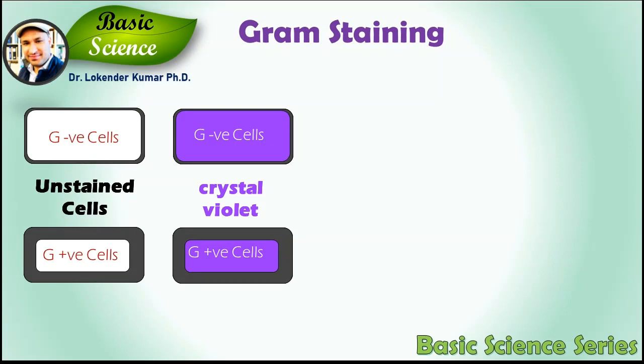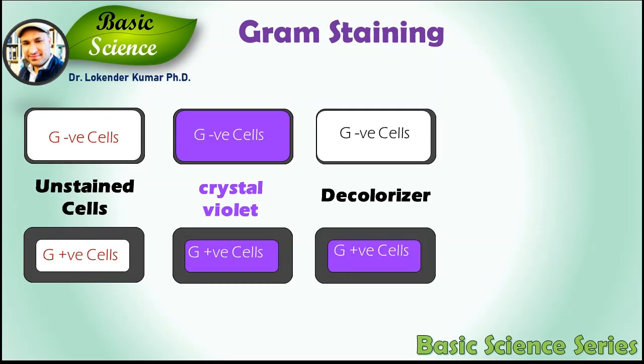At this stage, if you look under the microscope, you will not see any difference. Now, after the decolorization step, gram-negative cells will quickly lose the stain and will appear colorless. On the other hand, gram-positive cells have a thick cell wall and will not lose the stain, still appearing purple. If at this stage you allow the decolorization solution to act for a longer period of time, both cells will lose the color and the purpose of the staining will be defeated. Therefore, it is a very important step.